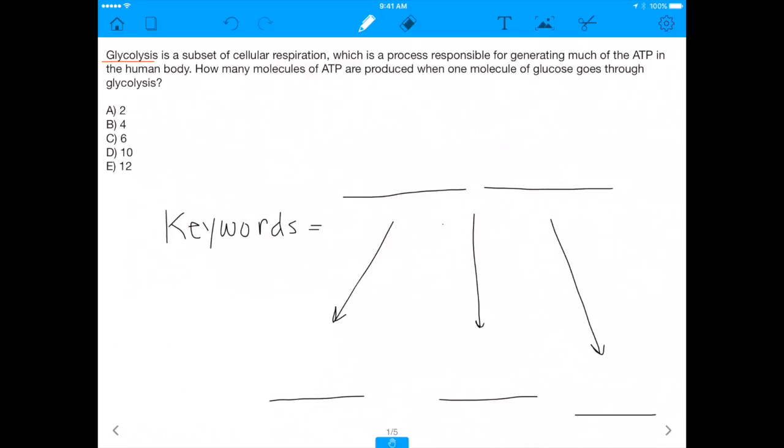It says, glycolysis is a subset of cellular respiration, which is a process responsible for generating much of the ATP in the human body. How many molecules of ATP are produced when one molecule of glucose goes through glycolysis?